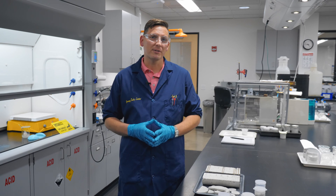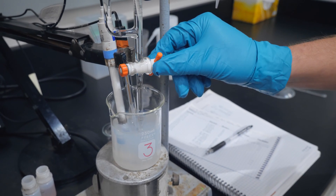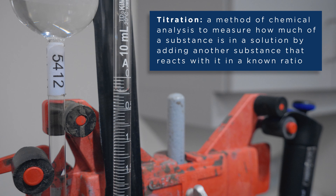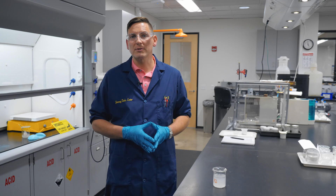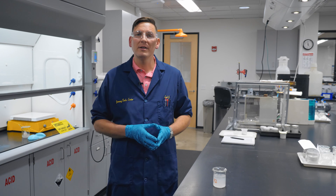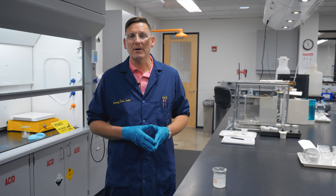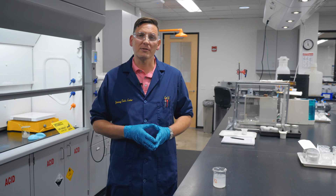Step five is the titration step where we will determine the chloride content of the sample. The results of this test indicate elevated levels of chloride in the cementitious sample. This is likely to induce corrosion on the steel reinforcement of the concrete bridge. This data will be relayed to our engineers at WJE who will use it in their service life modeling.